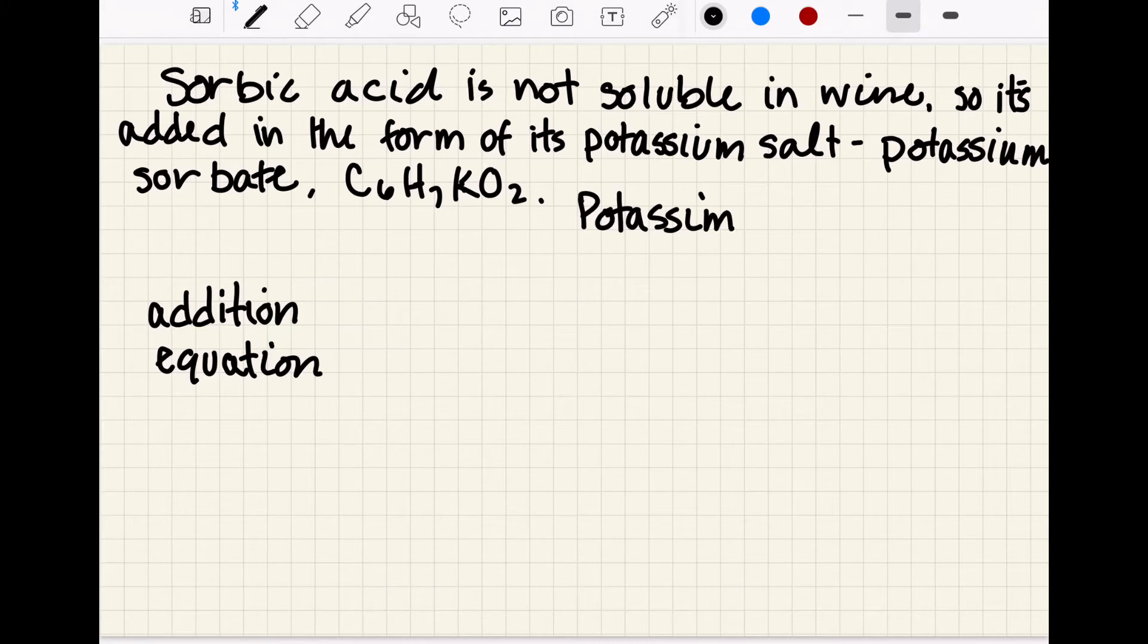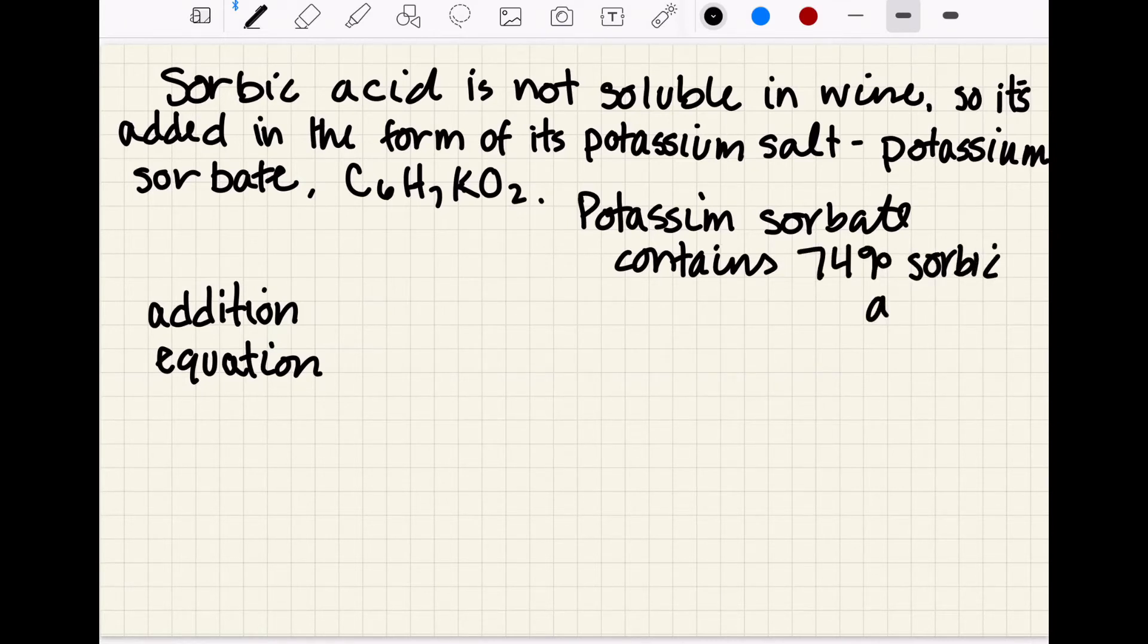So potassium sorbate contains 74% sorbic acid and this we need to keep in mind. If you would add up the weight of the elements in the compound of potassium sorbate, 74% by weight would be sorbic acid and the remaining is attributed to the potassium salt. So this needs to be accounted for in our equation when we're determining the rate of sorbic acid we want to add, but we're adding potassium sorbate. So for example, if we were going to add 1 gram of sorbate, that provides 0.74 grams of sorbic acid, so in our equation we will account for that.